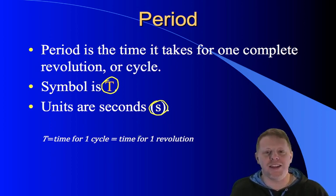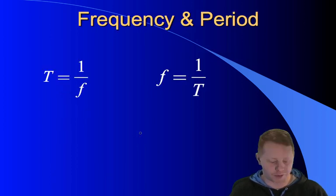So what we're going to find is frequency and period are very closely related. Period is just one divided by the frequency and alternately frequency is one divided by the period. If you know one, you can very easily find the other. Let's do a couple sample problems.